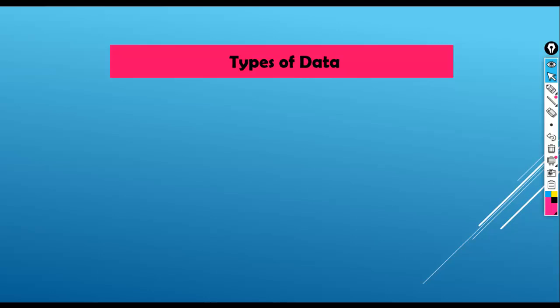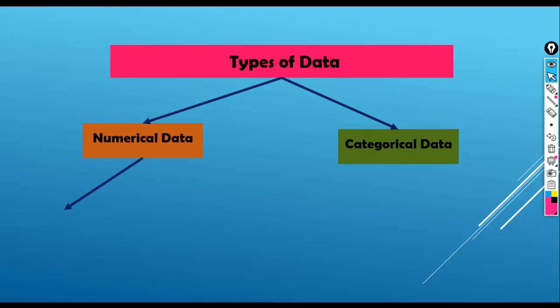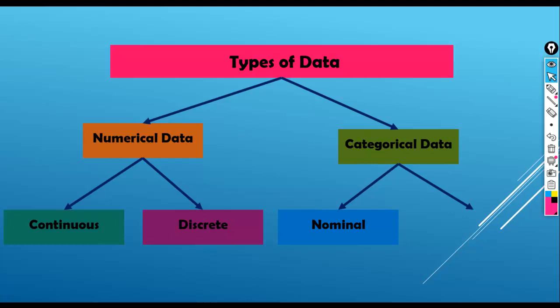There are many types of data in machine learning. Some common types of data include numerical data and categorical data. There are two types of numerical data: continuous and discrete. Categorical data can be nominal or ordinal.